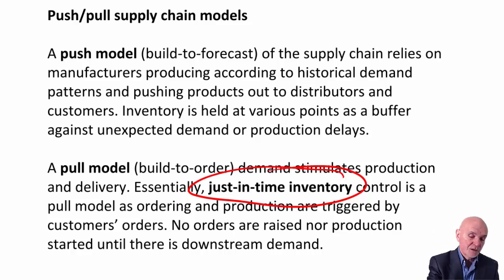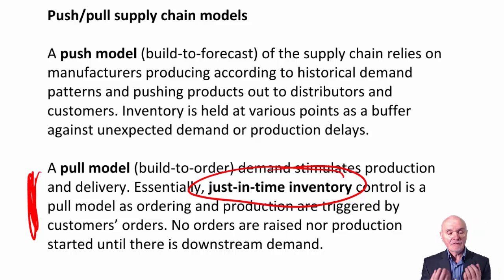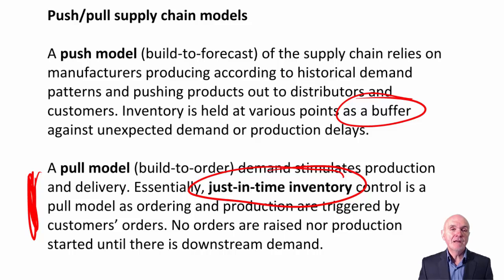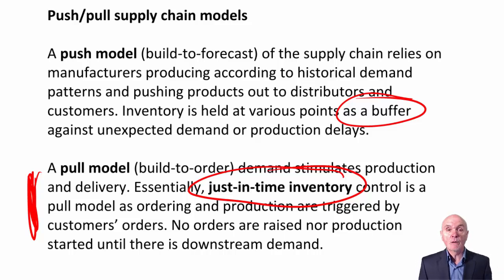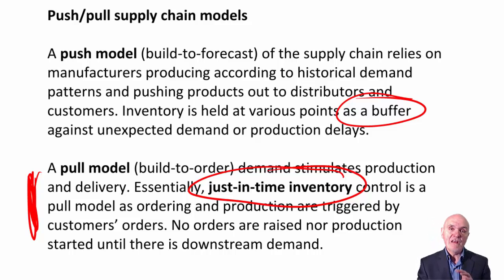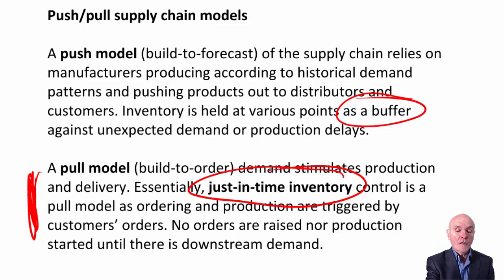The danger with the pull model is you are living on the edge a little. If any element of this clockwork machine breaks down, you're going to be in trouble. The potential advantage of the push model is that you have buffers — a little bit of inventory sitting around. If supply from your suppliers is delayed, you've got spare parts in inventory. If a machine breaks down and your customer is desperate, you've got some products in inventory to dispatch. But there's always the danger that you build the forecast and the forecast is actually wrong.